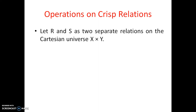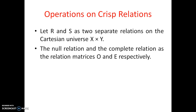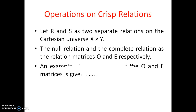For operations on crisp relations, let's take two relations R and S - two separate relations on the cartesian universe X cross Y. There are two important special relations: the null relation and the complete relation. These matrices are shown as O and E respectively. For the null relation O, all elements in the matrix are zeros, and for the complete relation E, all elements are ones.